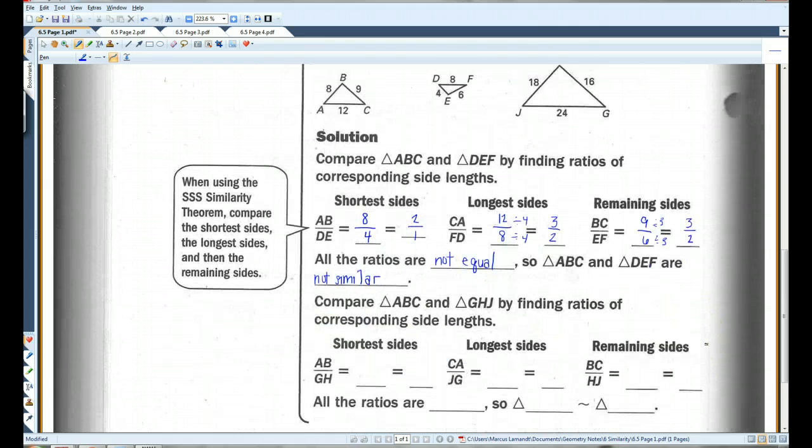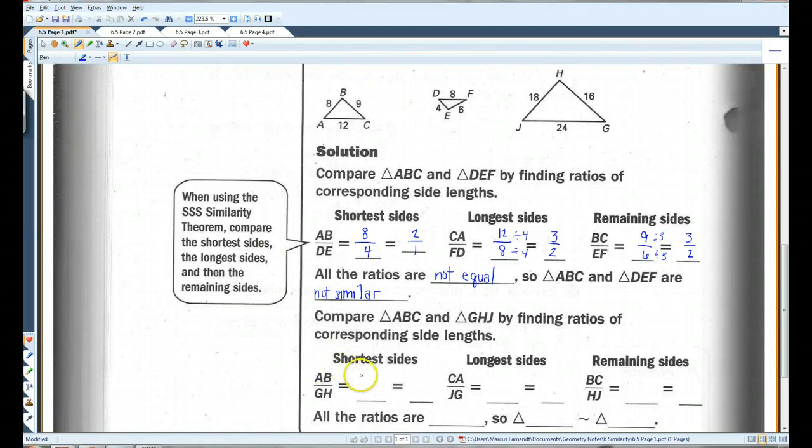Let's try the other two triangles. AB and GH: AB is 8, GH is 16. This simplifies to 1 over 2 if you divide top and bottom by 8. CA and JG: CA is 12, JG is 24. This also simplifies to 1 over 2. BC is 9, HJ is 18. Divide top and bottom by 9, you get 1 over 2. All the ratios are equal.